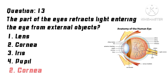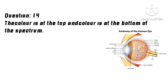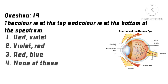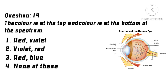Question 13: The part of the eye that refracts light entering the eye from external objects? Options: 1. Lens, 2. Cornea, 3. Iris, 4. Pupil. Correct answer: 2. Cornea.